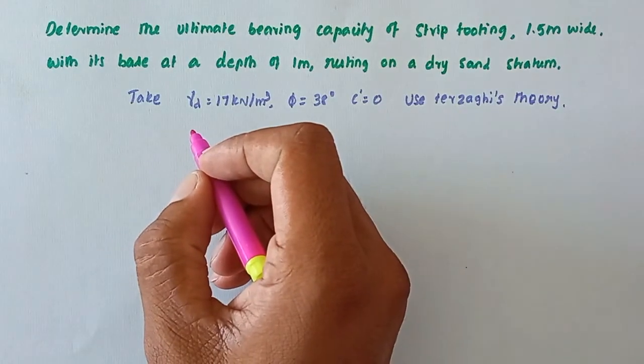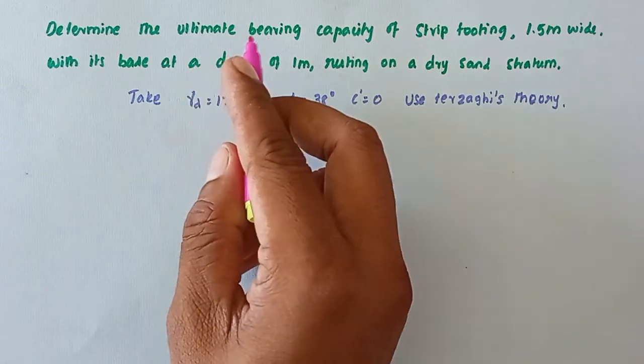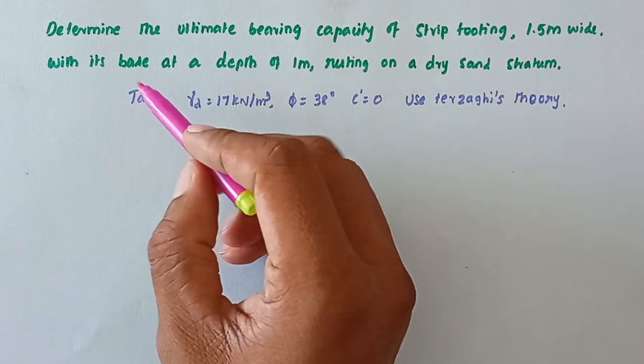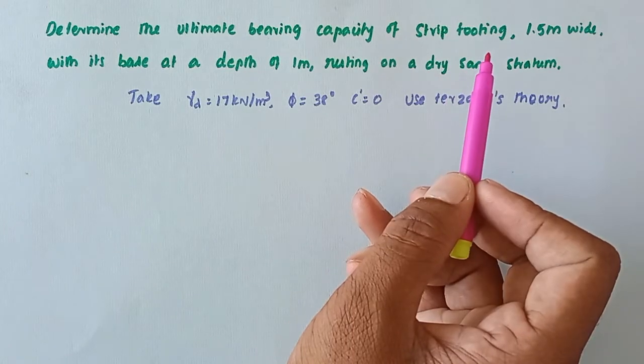Hello friends, welcome to Civil Engineering Exam. Today we're going to see a problem related with foundation engineering in the topic of ultimate bearing capacity. The problem is: determine the ultimate bearing capacity of strip footing 1.5 meter wide